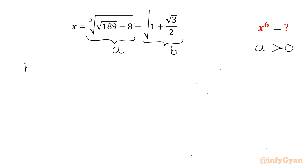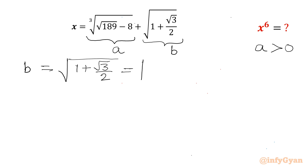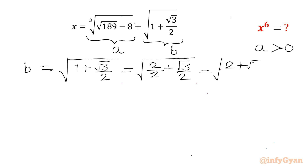I will begin with b. It is square root of (1 plus root 3 by 2). Now I can write 1 as 2 by 2, so it becomes 2 by 2 plus root 3 by 2. The denominator is common, so I will write (2 plus root 3) divided by 2.